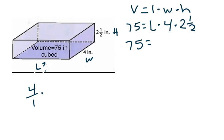And I need to turn 2 1⁄2 into an improper fraction. Well, 2 times 2 is 4 plus 1 is 5. So, that's going to be 5 over 2. Well, 4 times 5 is 20 over 2. So, it's going to be 20 over 2 L.